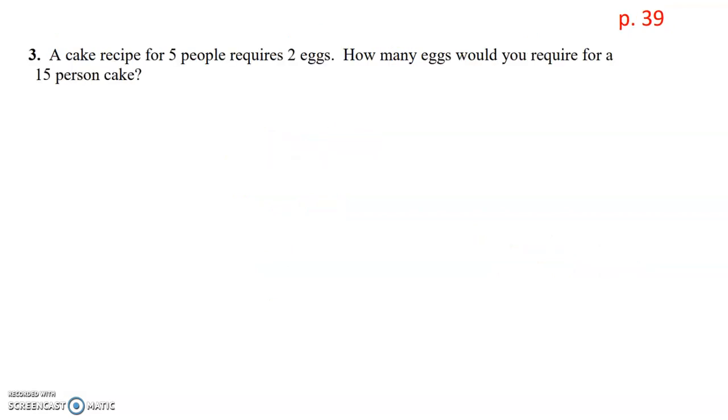Number 3 is a baking question. A cake recipe for 5 people requires 2 eggs. How many eggs would you require for a 15 person cake? Okay, so 5 people, 2 eggs. How many eggs, so we're going to be looking for that, would you require for a 15 person cake? All right, so we set up our proportion with the information we've been given. 5 people needs 2 eggs. And we know that we have 15 people, and the question is asking for eggs. And that works out great because everything's lined up in our proportion. I'm writing that as x there.